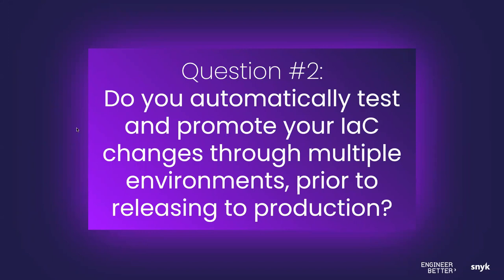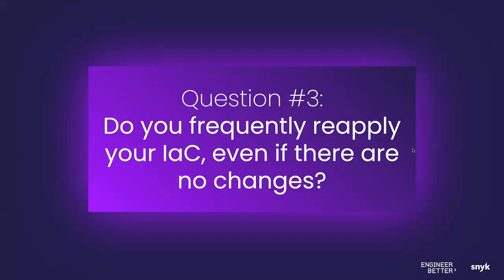We want to move forward and talk about drift. How frequently are you reapplying your IaC — and in particular, as a practice, reapplying your IaC even if nothing has changed, just reapplying it? The idea from the ebook was to help converge things back to what the expected state is — just making sure we're always capturing those things. Curious what people are doing on this.